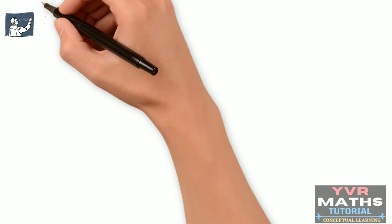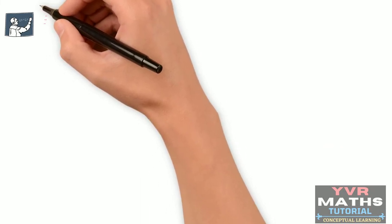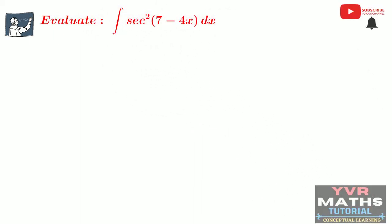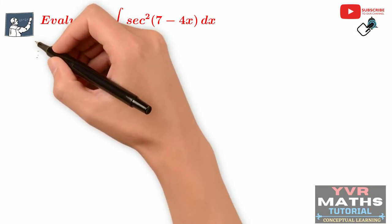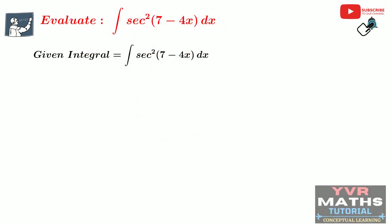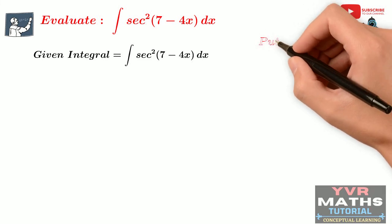Let us discuss one more problem. Evaluate integral of sec²(7 - 4x) dx. Given integral is equal to integral of sec²(7 - 4x) dx. Now substitute some part of the integrand as another variable such that its differentiation exists in the integral. If you observe the given integrand, the angle of the sec² term is 7 - 4x. The derivative of 7 - 4x is a constant. That's why I am considering the term 7 - 4x as a new variable. So put 7 - 4x equal to t.